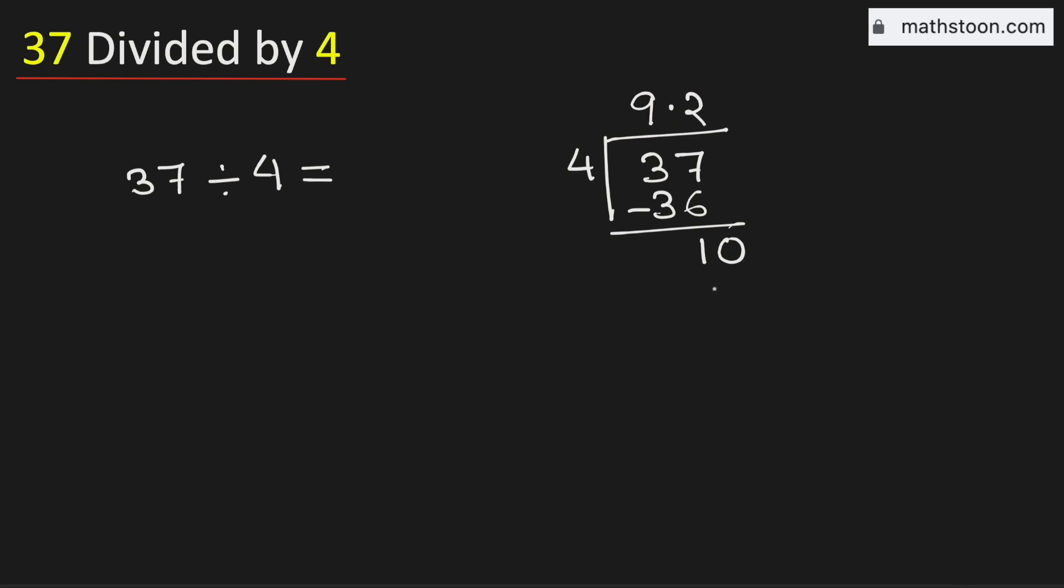Now 4 times 2 is 8. Subtract, we get 2. Now 2 is less than 4, that is why we will again borrow 1, 0.